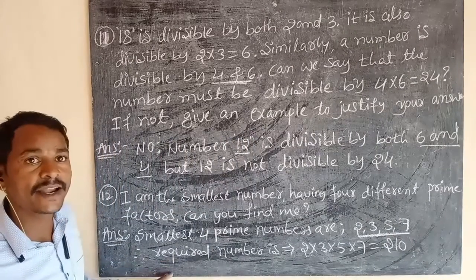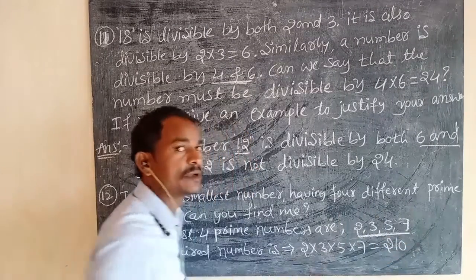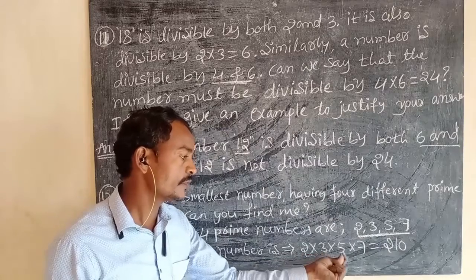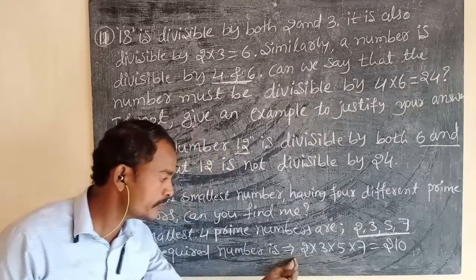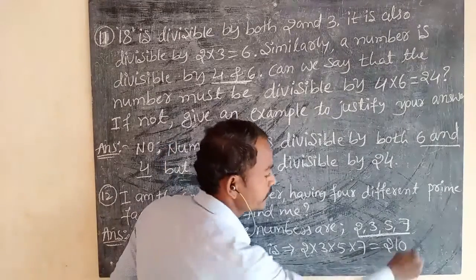Then the required number is the product of these 4 prime numbers. The required number is 2 into 3 into 5 into 7. The product of these 4 prime numbers is equal to 210. Our required number is 210.